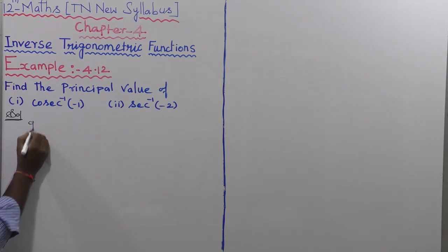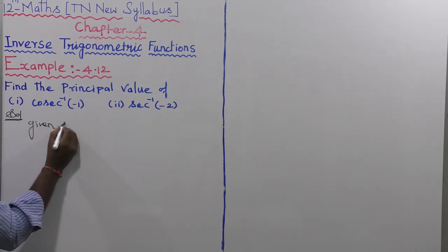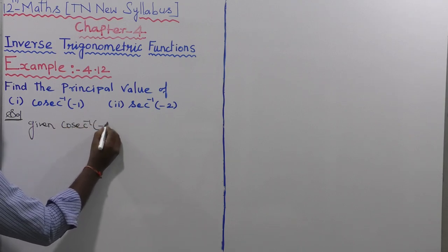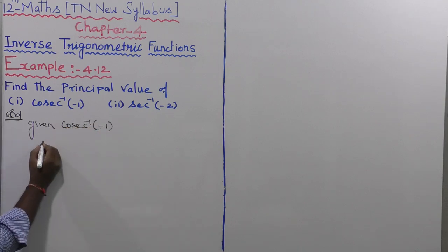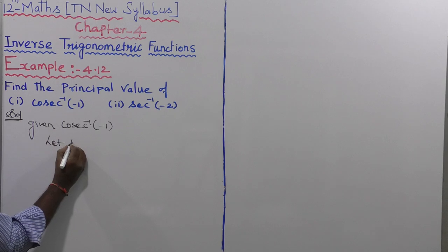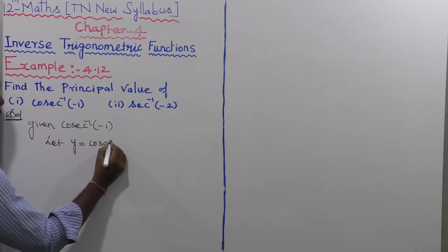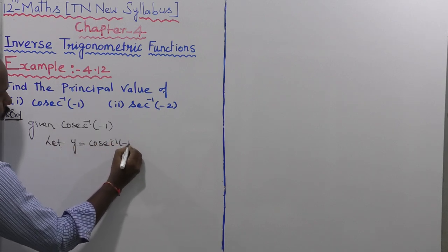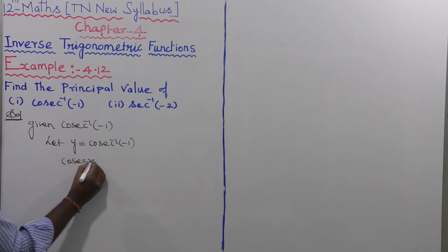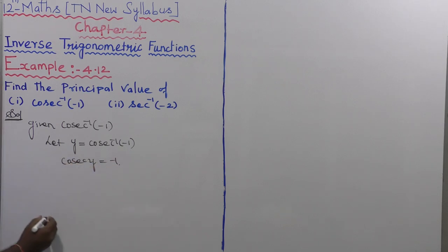For the first subdivision, the given value is cosecant inverse of minus 1. Let us consider y is equal to cosecant inverse of minus 1, which gives cosecant y is equal to minus 1.